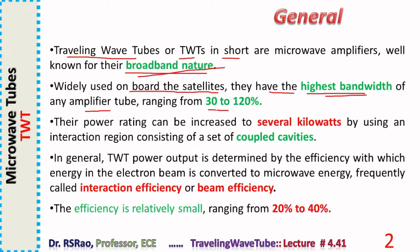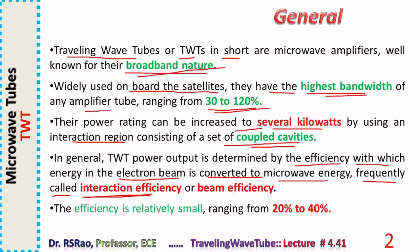Bandwidth ranges from 30 to 120%. Power rating can be increased to several kilowatts by using an interaction region consisting of coupled cavities. TWT power output is determined by the efficiency with which energy in the electron beam is converted to microwave energy, called interaction efficiency or beam efficiency. Efficiency is relatively small, ranging from 20% to 40%, but technological developments have enhanced efficiency levels to 50–70%.